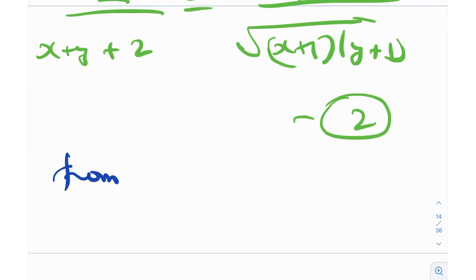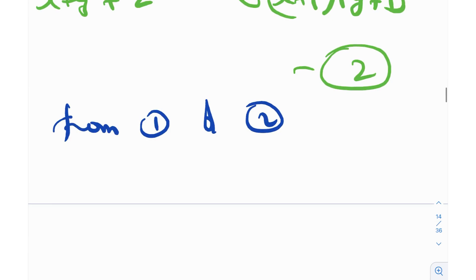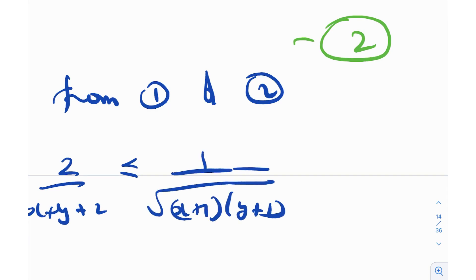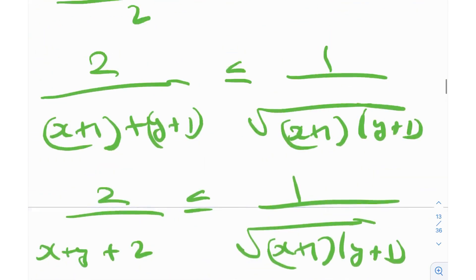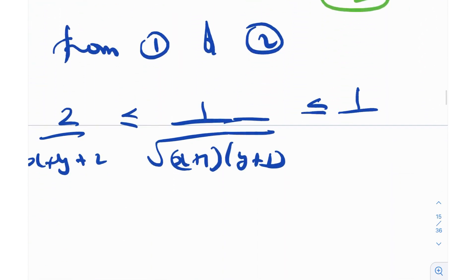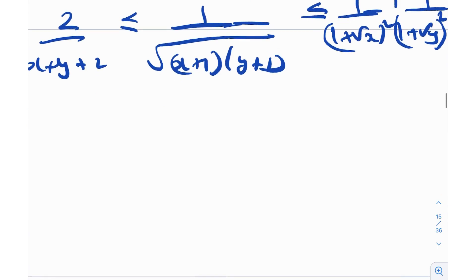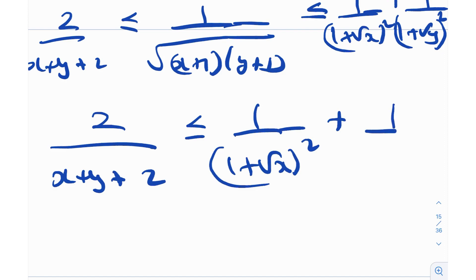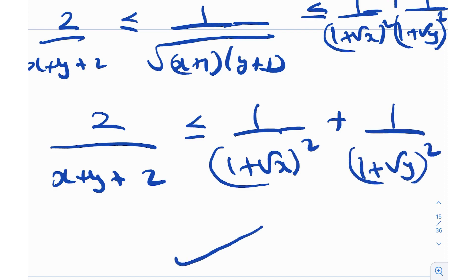From equations 1 and 2 we have reached our answer. From equation 2: 2/(x + y + 2) ≤ 1/√((x+1)(y+1)). From equation 1: 1/√((x+1)(y+1)) ≤ 1/(1 + √x)² + 1/(1 + √y)². So effectively, 2/(x + y + 2) ≤ 1/(1 + √x)² + 1/(1 + √y)².